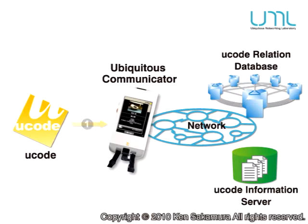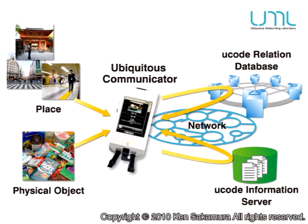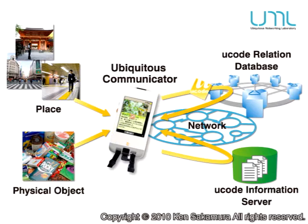By itself, the U-code is meaningless, but when we send the U-code to a server on a computer network, we can retrieve information associated with it from information servers. A process called resolution takes place, and we obtain an address. Often, this is an Internet URL one can access to obtain useful information.